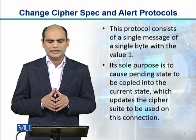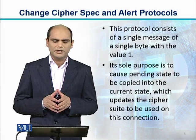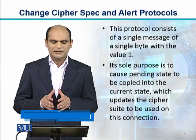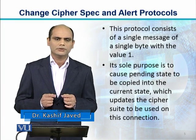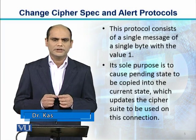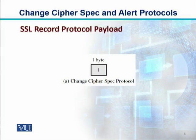Yeh jo value one hai, yeh kya indicate karti hai? Its sole purpose is to cause the pending state to be copied into the current state, aur yeh update kya karta hai? Yeh update karta hai the cipher suite to be used on this connection. Toh jo connection established ho chuka hai client aur server ke darmiyan, uska jo cipher suite hai, uske state ko update kara raha hai. Ager aap is diagram ko dekhen, toh yeh Change Cipher Spec Protocol ki value one hai, aur yeh ek hi byte ka hai — iske andar ek hi field hai.